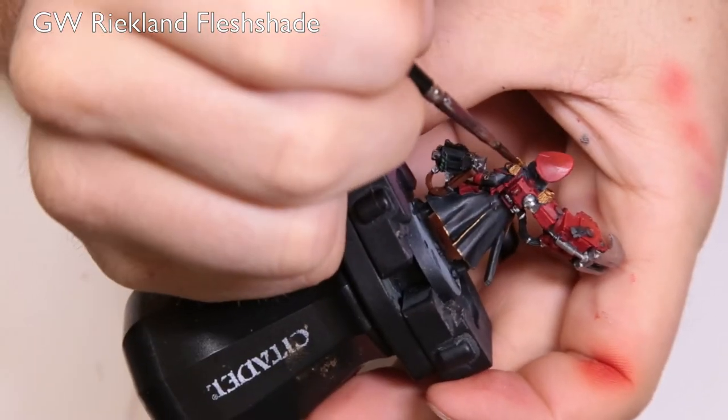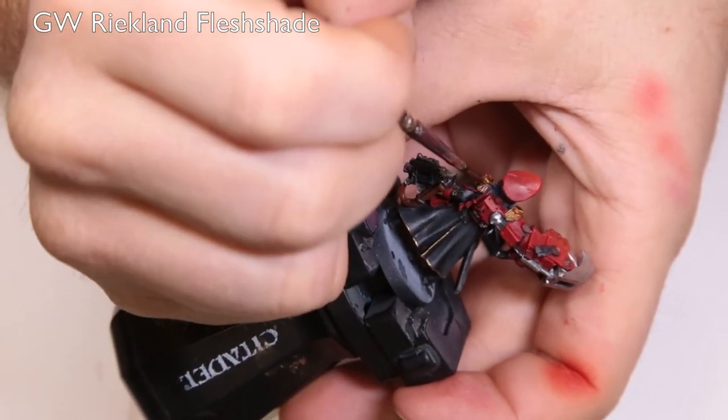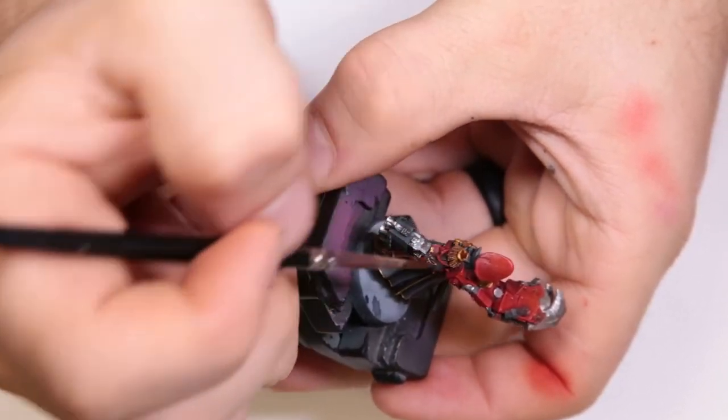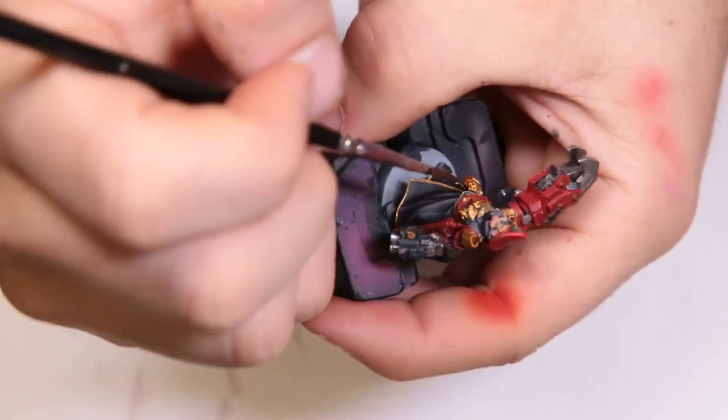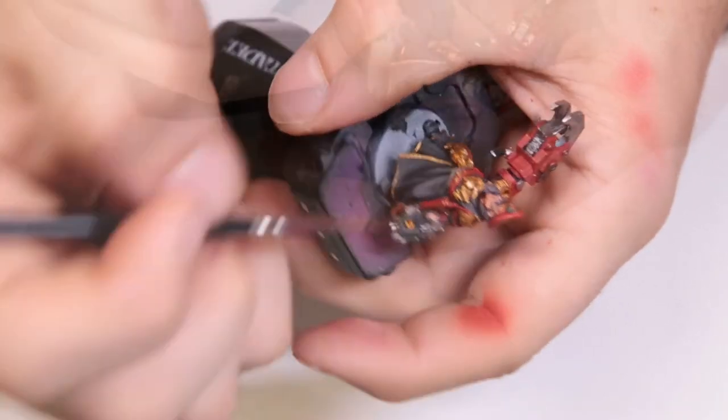Now we're on to Reikland Fleshshade. We're just giving an all-over wash to all the golds on him and his face. Not too much to give attention to here, but just hit it with a quick wash, and we'll come through and highlight it up in a second. Make sure you give his face good attention. It's got a lot of deep details in it.